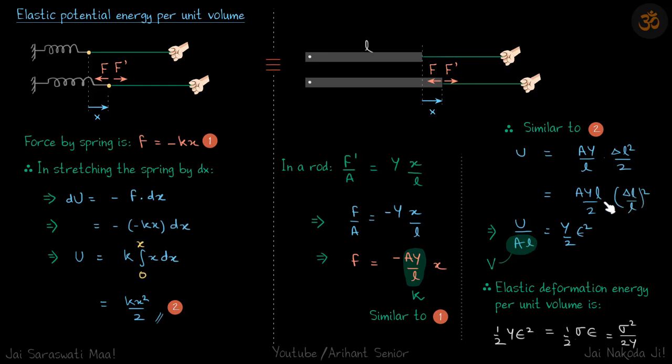We know delta L by L is strain, so this becomes Y strain squared by two. And let's take AL here.